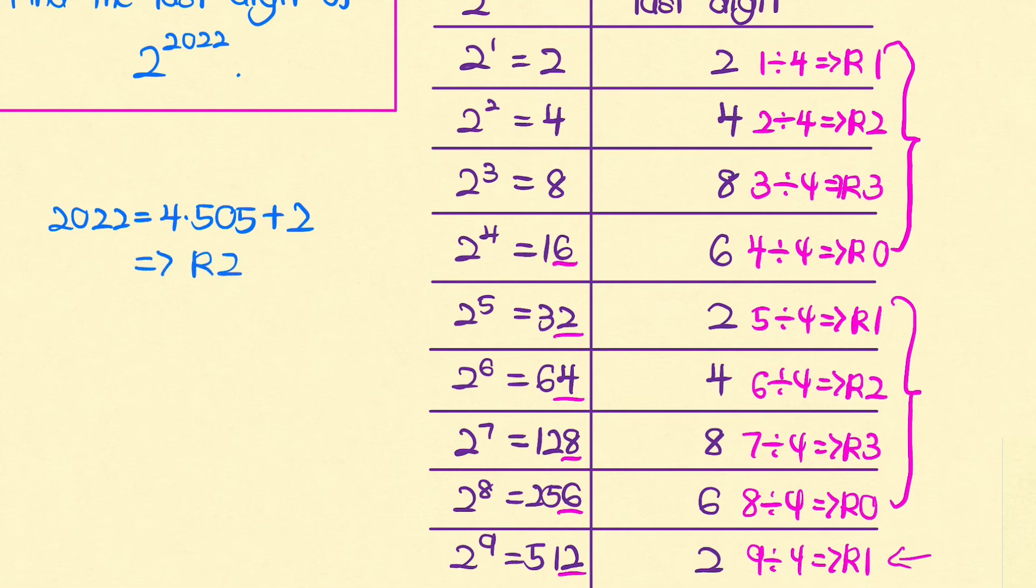And therefore this tells us that the last digit of the number 2 to the power of 2022 is actually equal to 4. And so we are done.